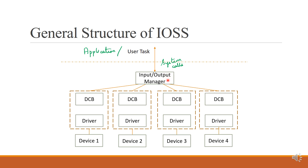The DCB contains information such as the amount of data to be transferred, type of data, and status of the devices. Once the system call information is sent to the DCB, the DCB understands what type of information it has received. The actual transfer of data between the user and the device is carried out through the driver. Each device has its own DCB and driver, and the device driver is a program to control a particular type of device.